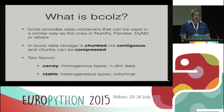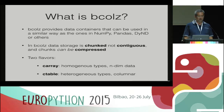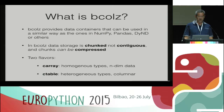I am going to show you an example of a data container implementation that leverages these new computer architectures. Bcalls is a library that provides data containers that can be used in a similar way to NumPy, Pandas, Dask, or others. In Bcalls, data storage is chunked, not contiguous, and chunks can be compressed. There are two flavors: CArray, which is meant to host homogeneous types and multidimensional data, and CTable for heterogeneous types stored in a columnar way.